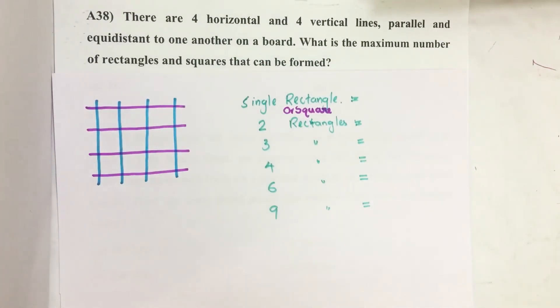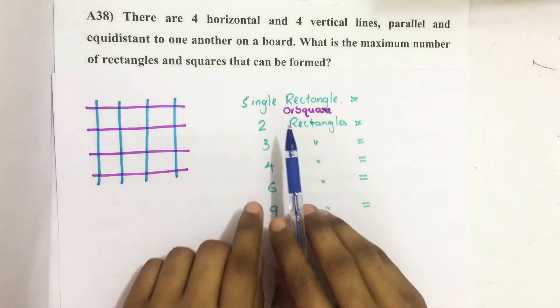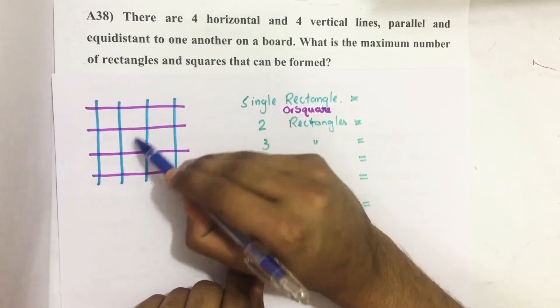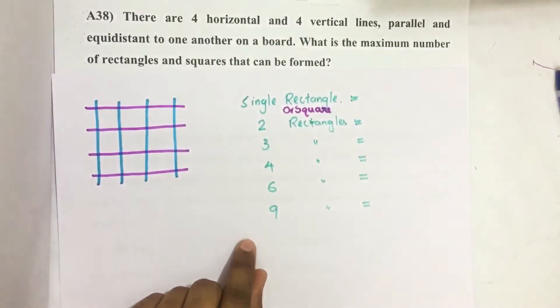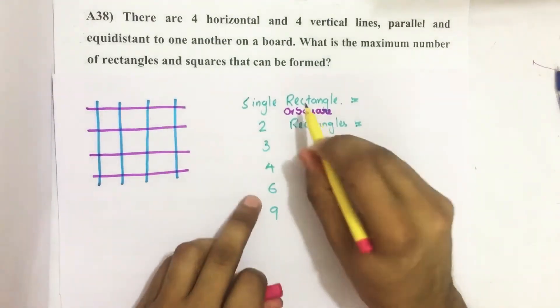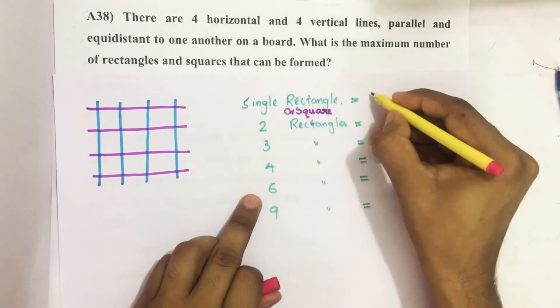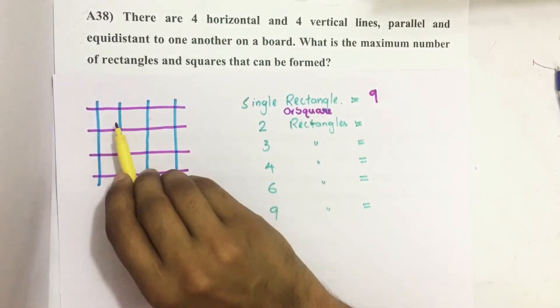So to avoid that we use a technique to count like this. These are single squares—there are nine such single squares. So we mark single rectangles or squares which equals nine.